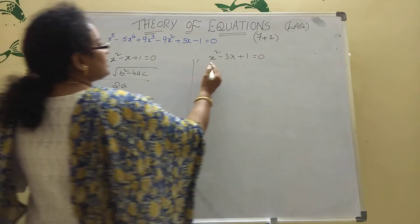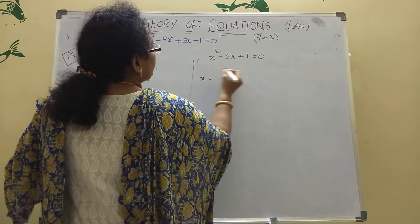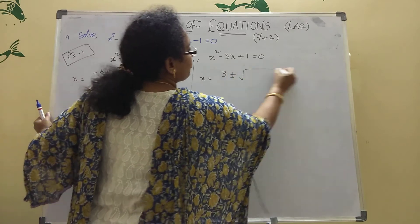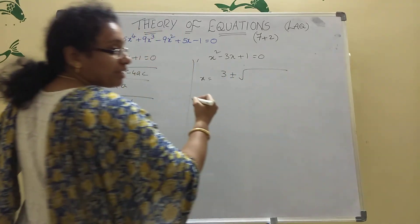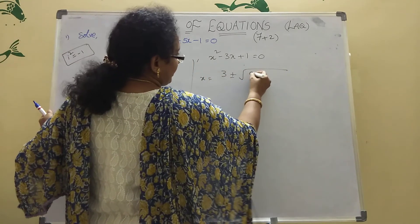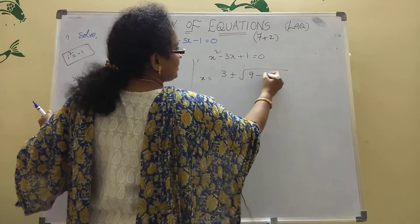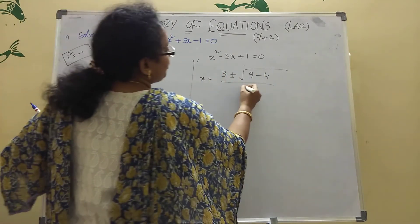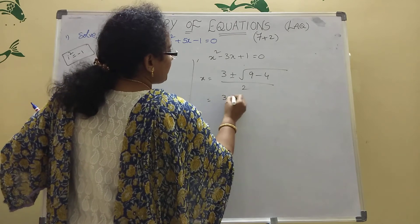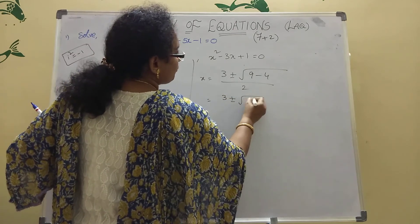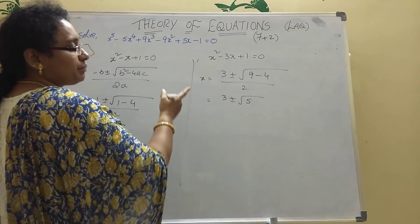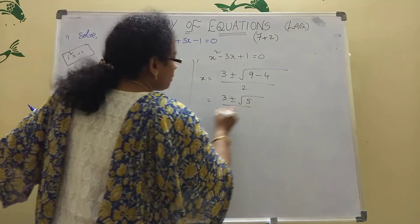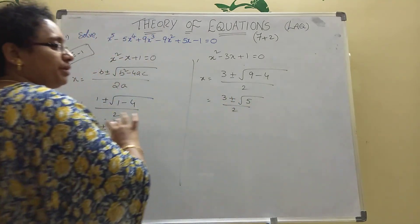Next for x^2 - 3x + 1 = 0: compare — minus b gives 3. Then ± √(b^2 - 4ac) = ± √(9 - 4) = ± √5. Divided by 2. So x = (3 ± √5) / 2.